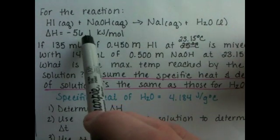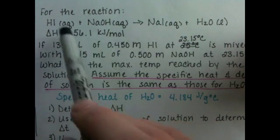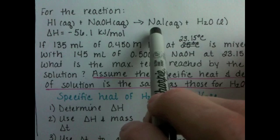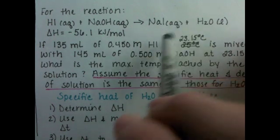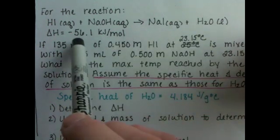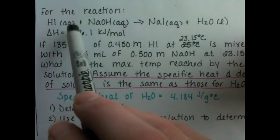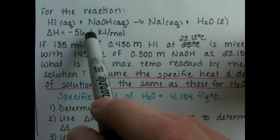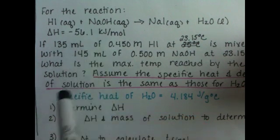We've got a ΔH, negative 51 kJ/mol, for one mole of HI, one mole of NaOH, one mole of sodium iodide, one mole of water. We want to use the quantities given to us in this problem, and figure out exactly how much HI are we reacting, and exactly how much energy is being given off by that reaction. So we're going to get our actual ΔH.